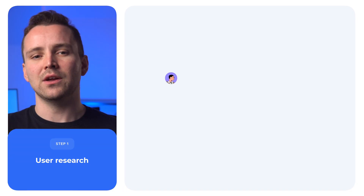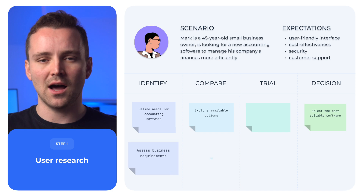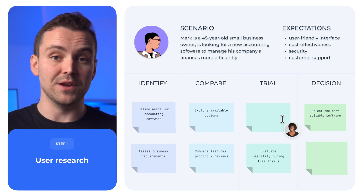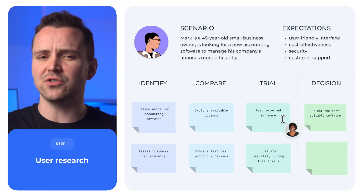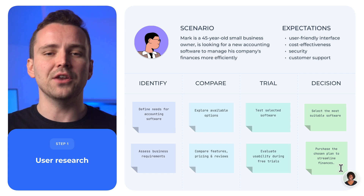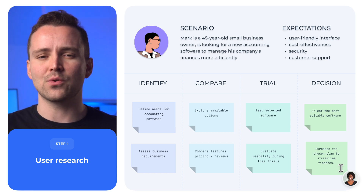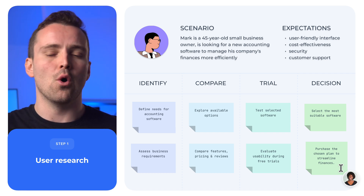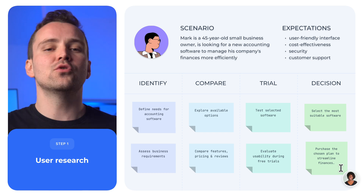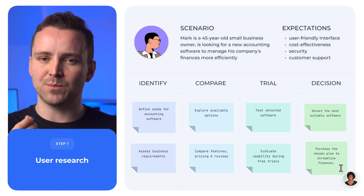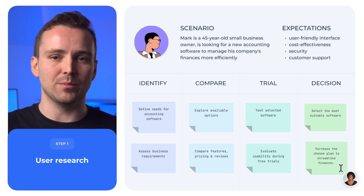Here's how to build one. Step 1: Do user research and understand the customer journey. User flow is part of the bigger journey a user takes towards their goal, and understanding that is the key to creating a crisp on-site or in-app experience. To create effective journey maps, build them around a specific user persona.